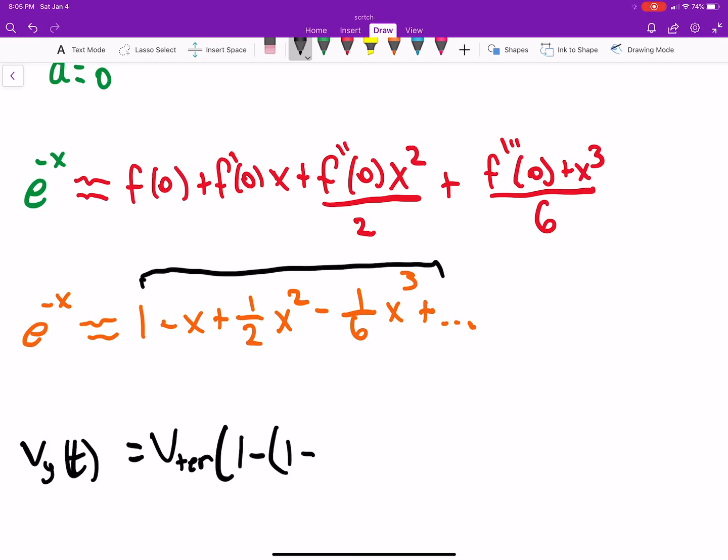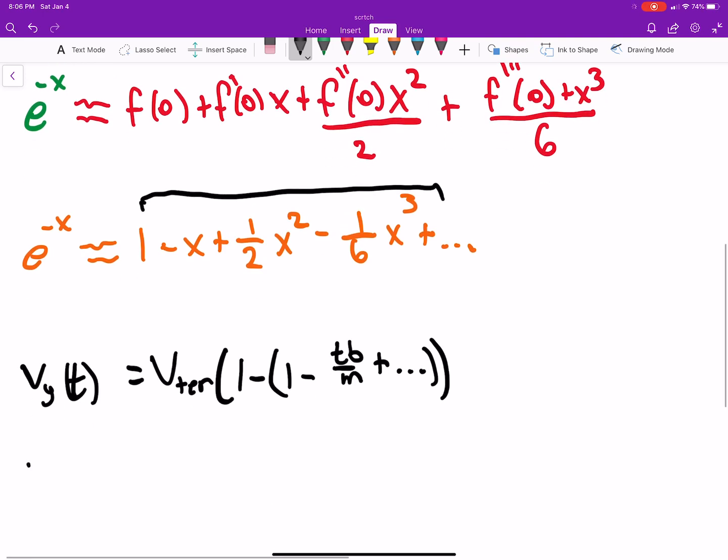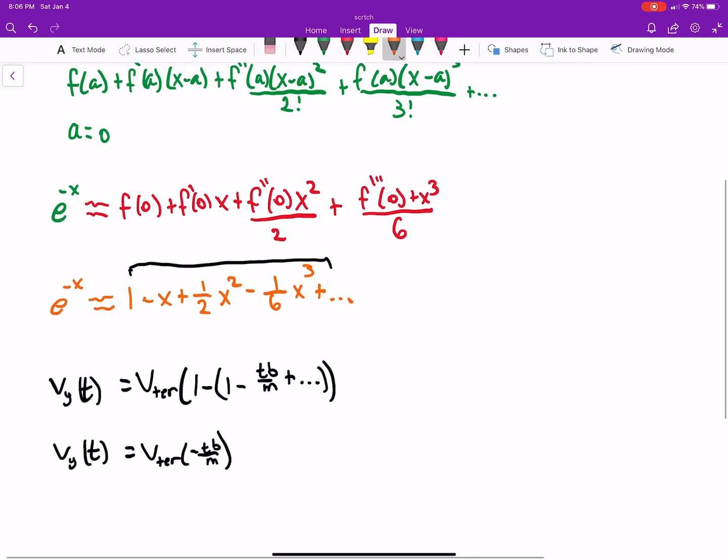So that's going to be minus x, which is tb over m, plus you can keep filling in the rest. However, just as an approximation, we don't have to do that. So we just did the first two terms. Now if we work through this, this is v terminal, one minus one is zero, so that's just going to be times minus tb over m.